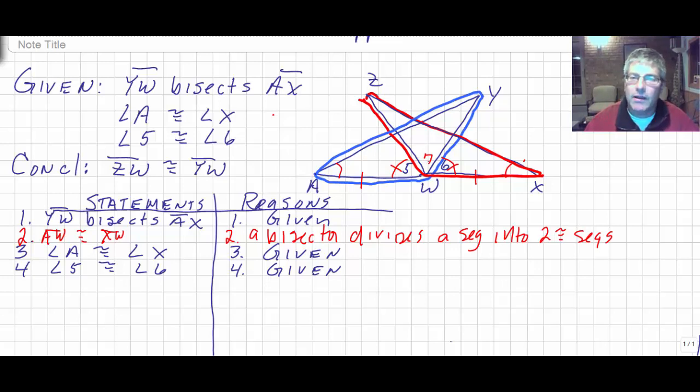So you may see we have some addition here. If we add our angle 7 to angle 5, that's going to give us what we need. And if we add angle 7 to angle 6, that's going to give us what we need. So step 5, we're going to say that angle 7 is congruent to angle 7 by reflexive. Because we're going to add that angle 7 to angle 5. And we're going to add that angle 7 to angle 6.